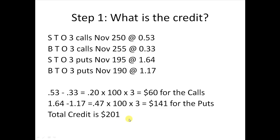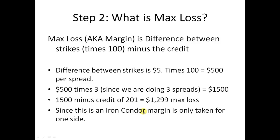So that's how you calculate the credit. You take whatever you received minus whatever you paid, multiply by 100 — you always have to multiply by 100 — and then by the number of spreads you did. If he had only done one spread, it would have been 0.20 × 100 = $20. But since he did three spreads, you multiply by three.